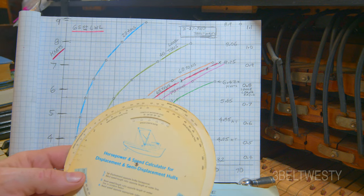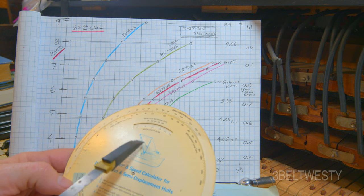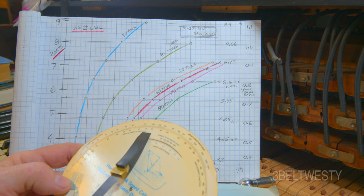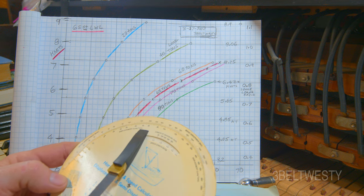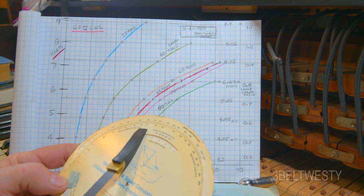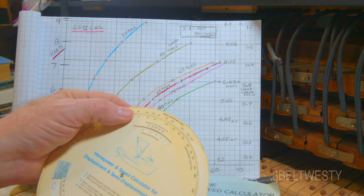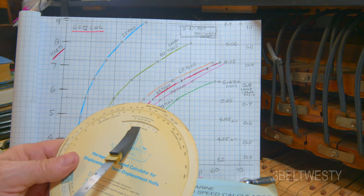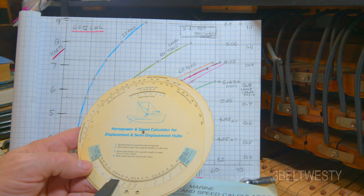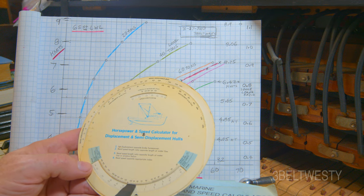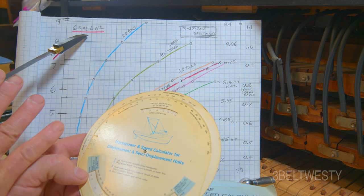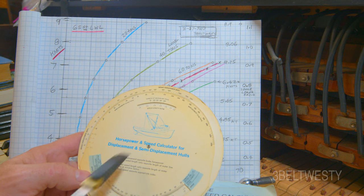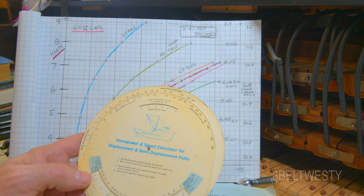On this thing, you go through and input speed to length. You use a displacement in tons, long tons. That's 2,240 pounds. Then you line this up to the horsepower here, and you get a speed to length ratio. You put that back down into here versus the waterline length. I use 65 feet. Then you can get the speed in knots. This is for a displacement hull, something that's not going to plane.